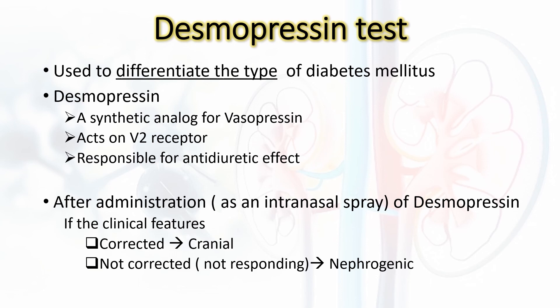But if the type of diabetes insipidus is nephrogenic, the clinical features are not corrected, because the collecting ducts of the kidneys are insensitive to vasopressin as well as its synthetic analog, desmopressin. That is an overview of diabetes insipidus. Thank you for watching.